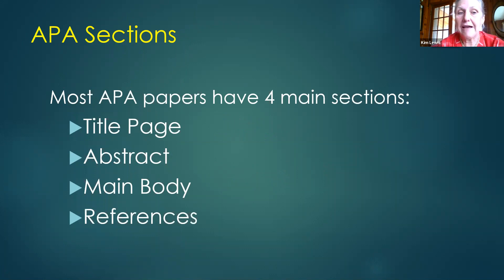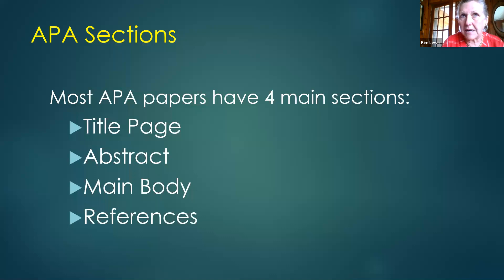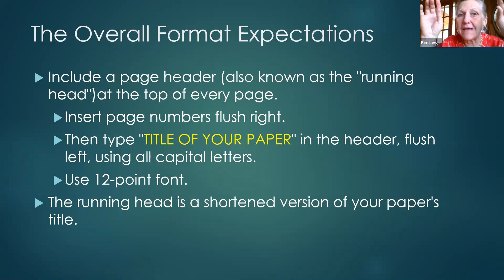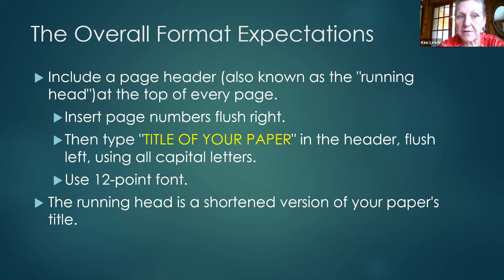APA has four main sections: a title page, an abstract, a main body, and then the references. For the page header in APA, there's something called a running head — it goes in the same top-margin area as MLA's header. Page numbers are flush right, and you type the title of your paper in the header on the left in all capital letters, 12-point font, as a shortened version.